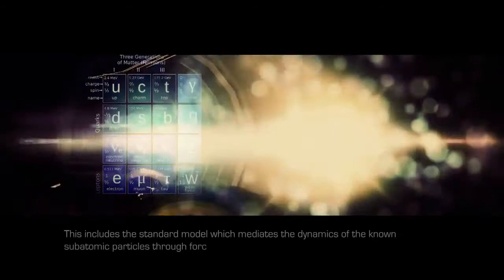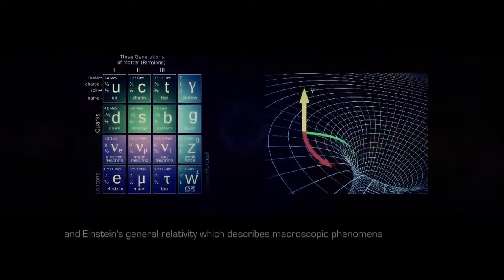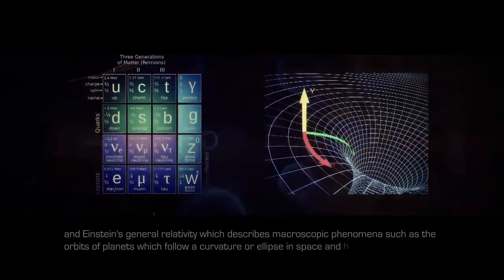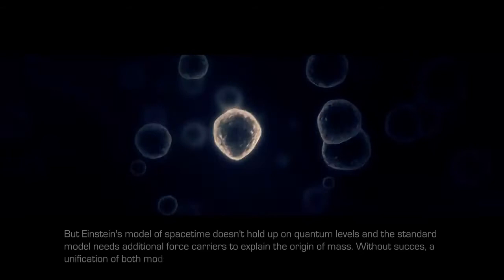This includes the standard model, which mediates the dynamics of the known subatomic particles through force carriers, and Einstein's general relativity, which describes macroscopic phenomena such as the orbits of planets, which follow a curvature or ellipse in space and a helix in spacetime. But Einstein's model of spacetime doesn't hold up on quantum levels, and the standard model needs additional force carriers to explain the origin of mass. Without success, a unification of both models or theory of everything has been subject of much research.